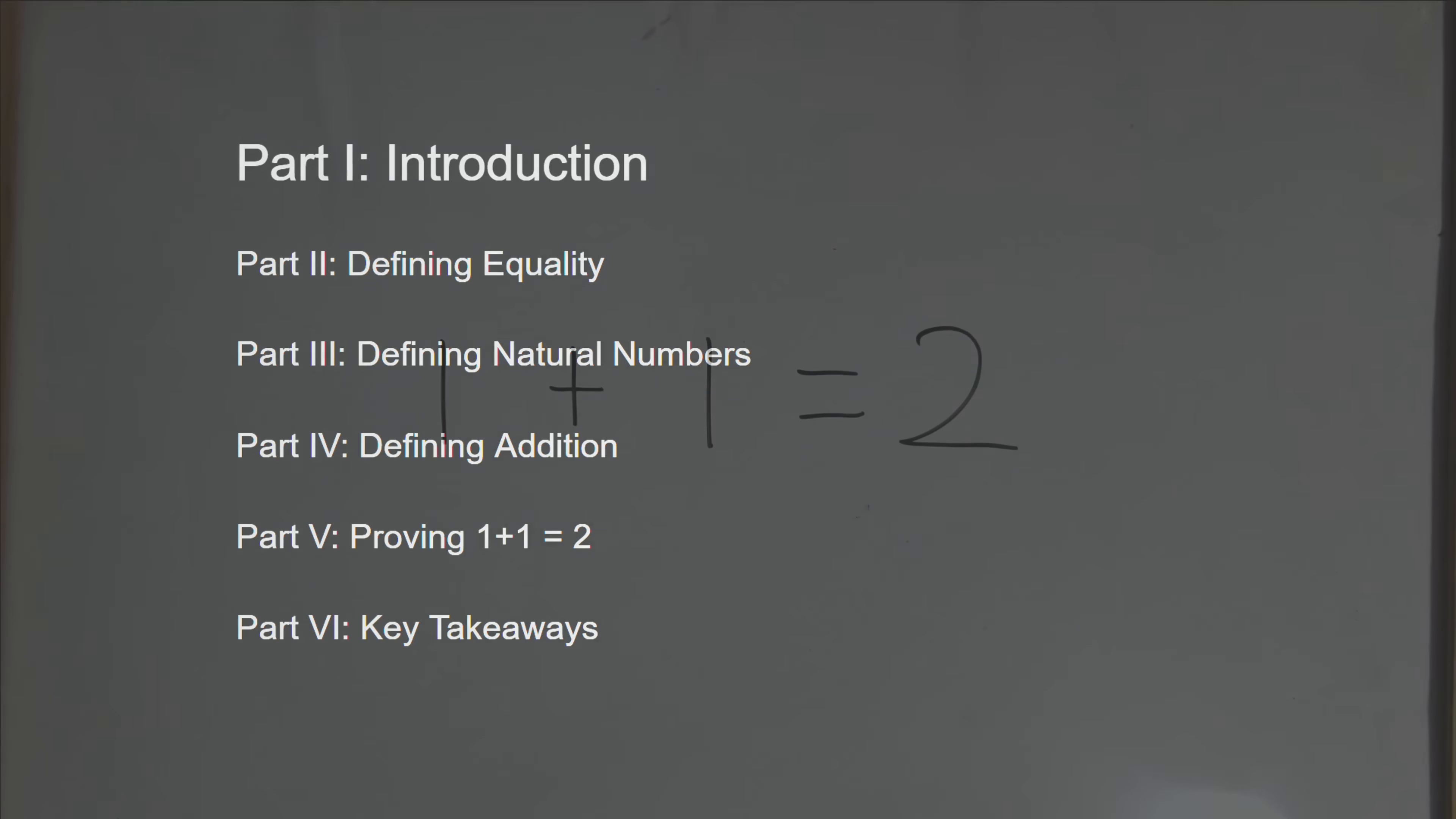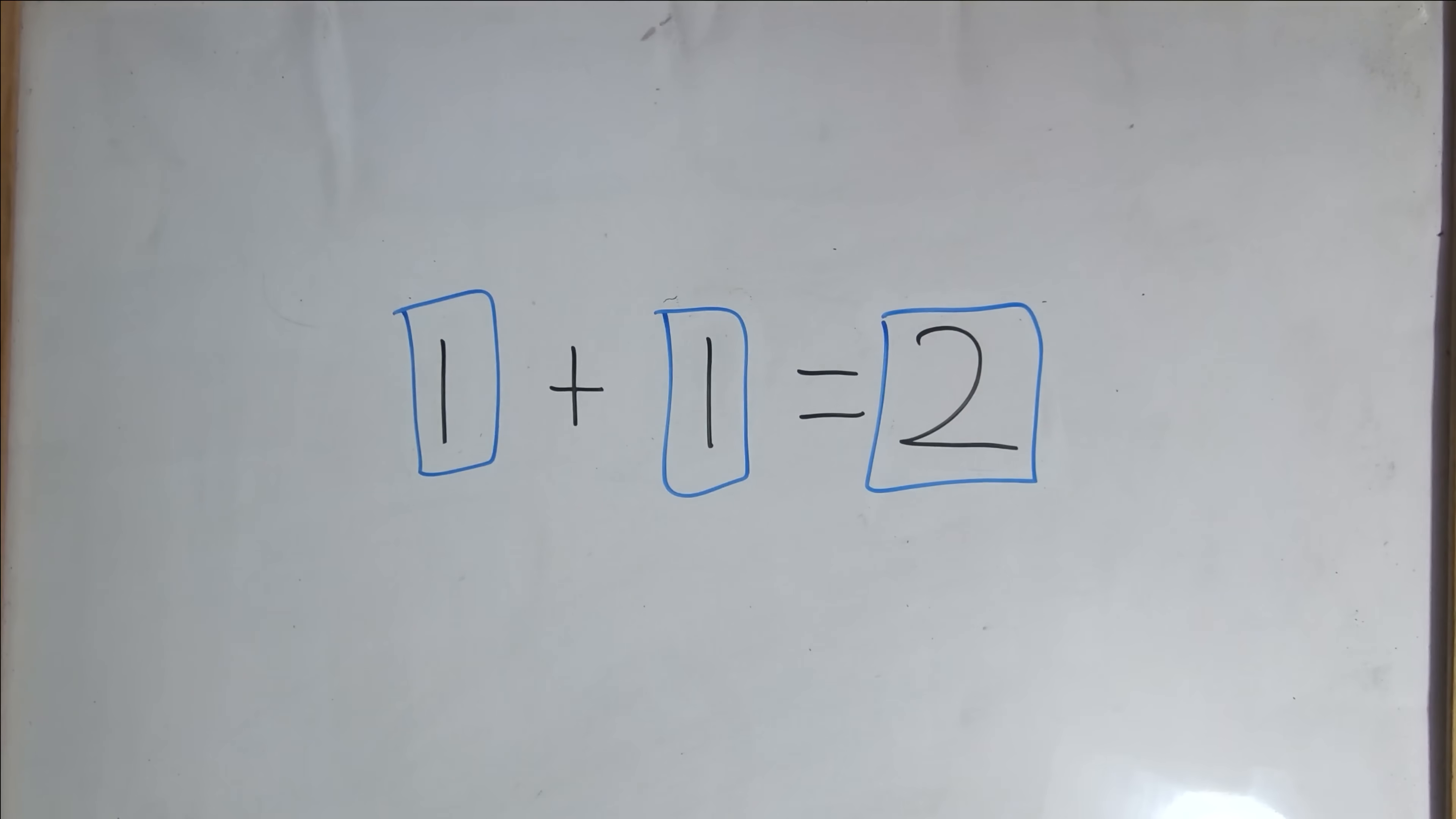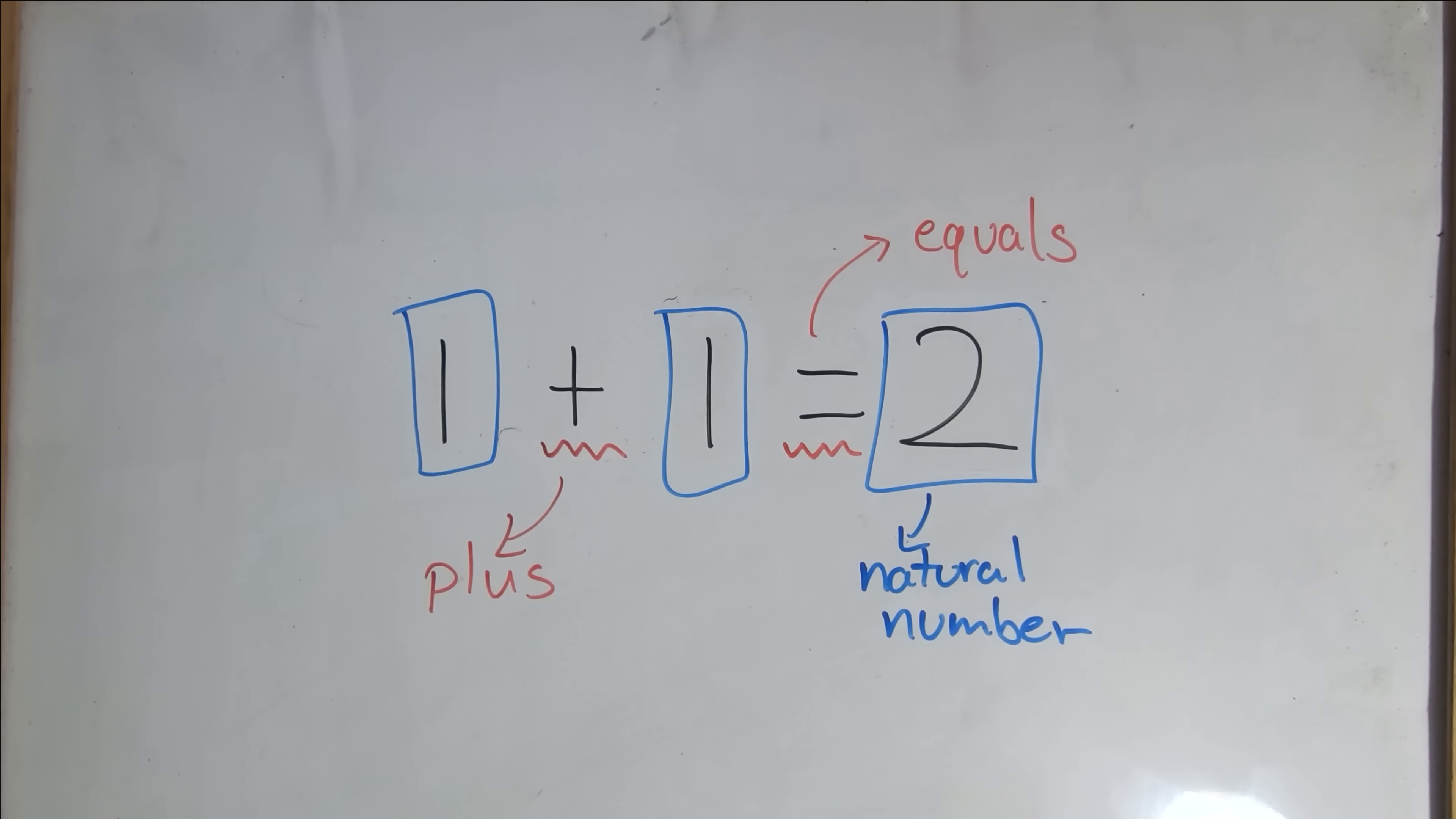Alright then, let's go back to our equation. We can notice that there are three main components to this equation. The numbers 1 and 2, which are often what we refer to as natural numbers, the addition symbol, and this equal symbol. To truly understand what this equation implies, we need to define all three of these symbols.